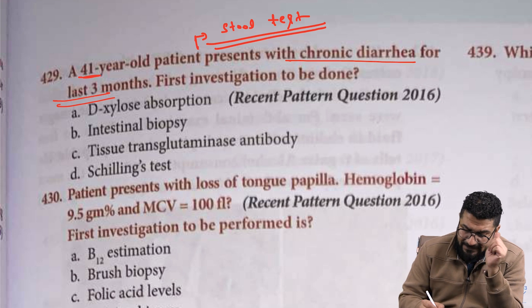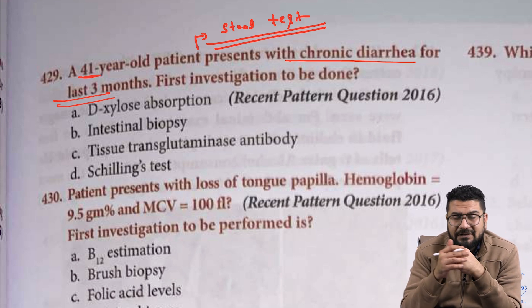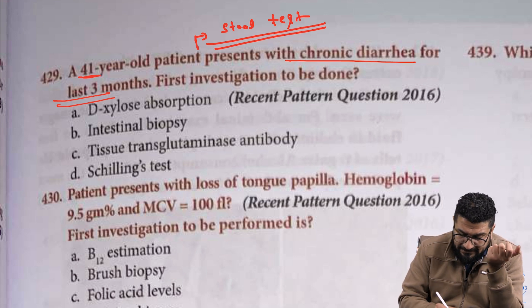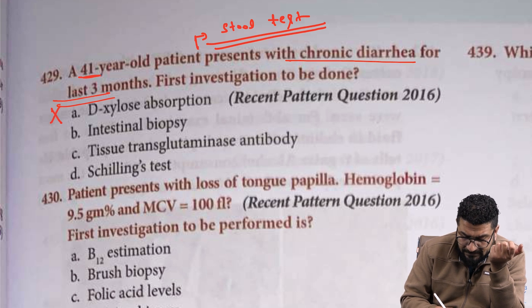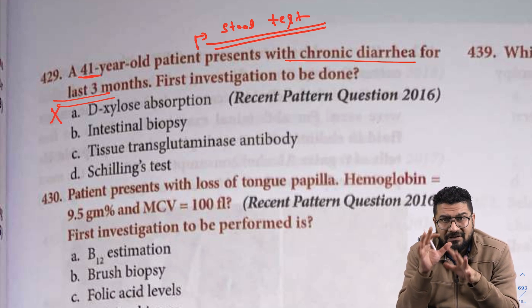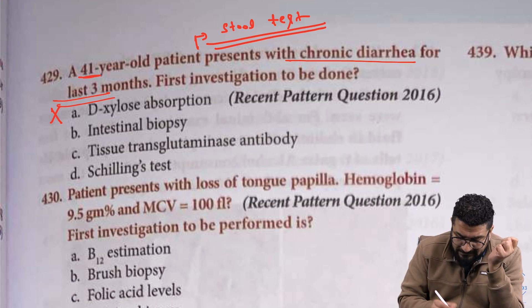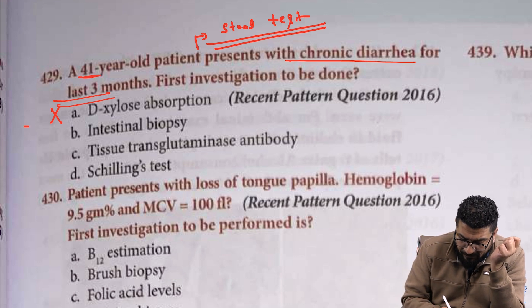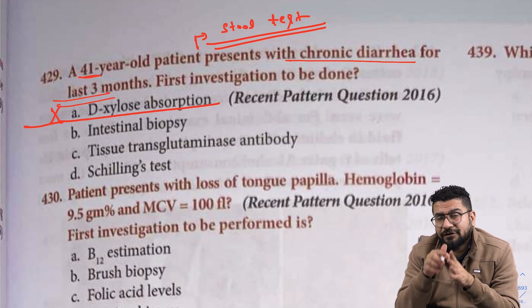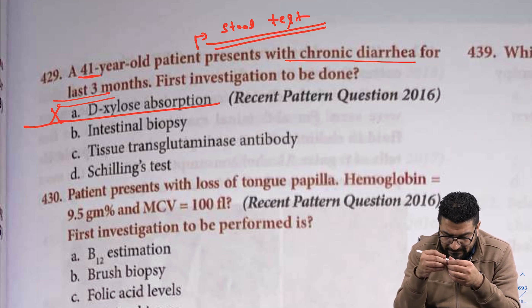D-xylose absorption is a carbohydrate-based test. We can do this for the proximal part of the intestine whenever there is a problem in the proximal intestine — it is only for the proximal part. Again, this test is obsolete nowadays, so we don't use it.